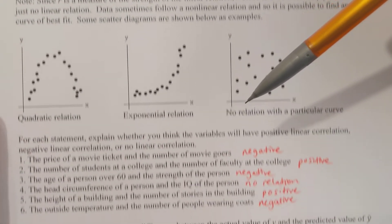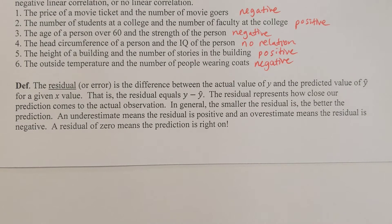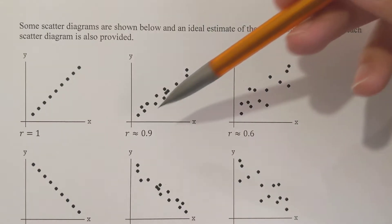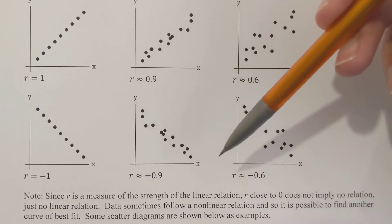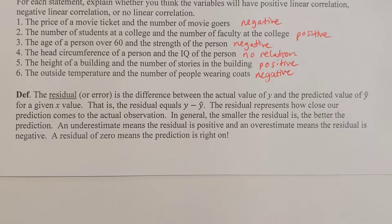We went over some terminology and what it means to have a positive or negative association. If the line is slanted in the positive direction, you're going to have a positive relation. If it's slanted in the negative direction, you're going to have a negative relation. The residual or error is the difference between the actual value of y and the predicted value of y-hat for a given x value. The residual equals y minus y-hat, and it represents how close our prediction came to the actual observation. In general, the smaller the residual, the better the prediction.